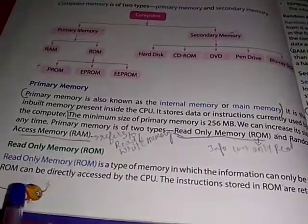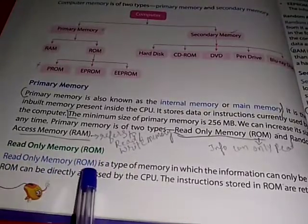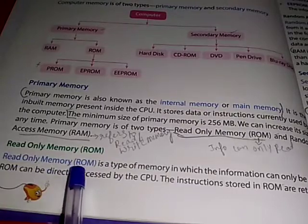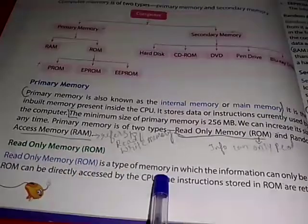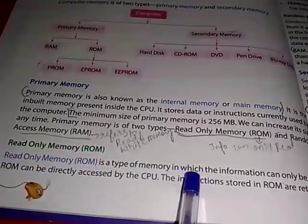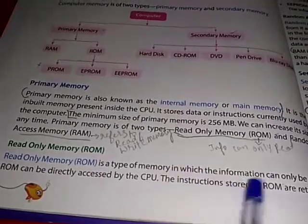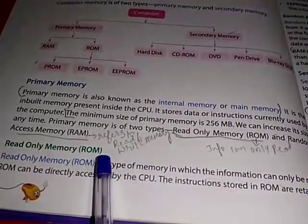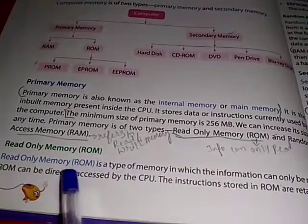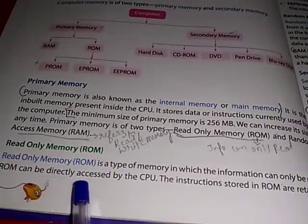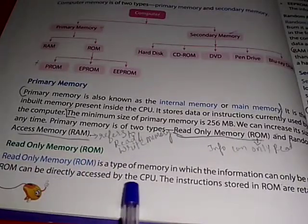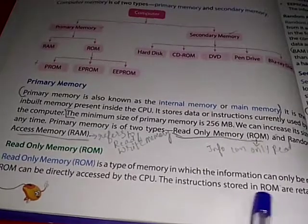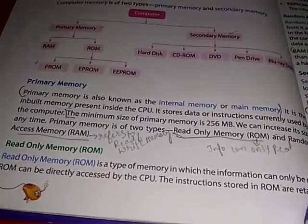Read-only memory, or ROM, is a type of memory in which information can only be read. ROM can be directly accessed by the CPU, and the instructions stored in ROM are retained.